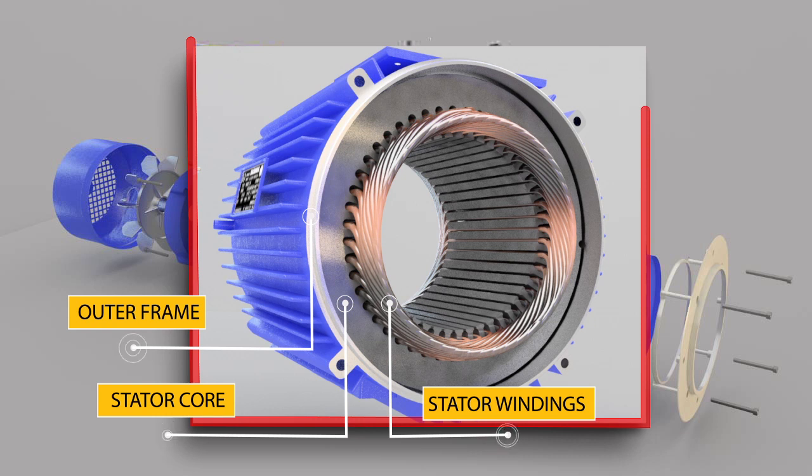The core of the stator carries three phase windings which are usually supplied from a three phase supply system. The six terminals of the windings, two of each phase, are connected in the terminal box of the machine. The stator of the motor is wound for a definite number of poles, depending on the speed of the motor. If the number of poles is greater, the speed of the motor will be less and if the number of poles is less, then the speed will be high.